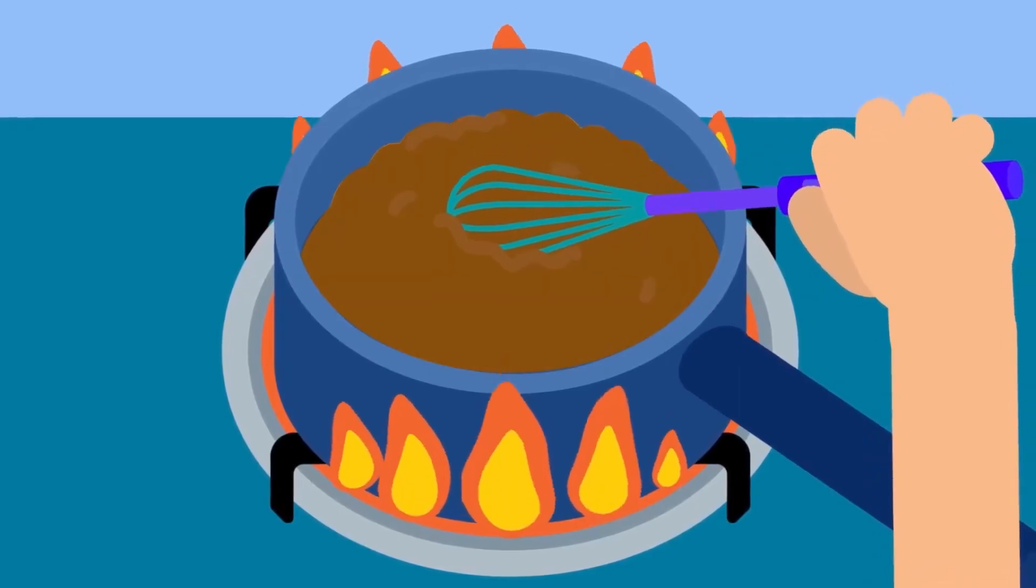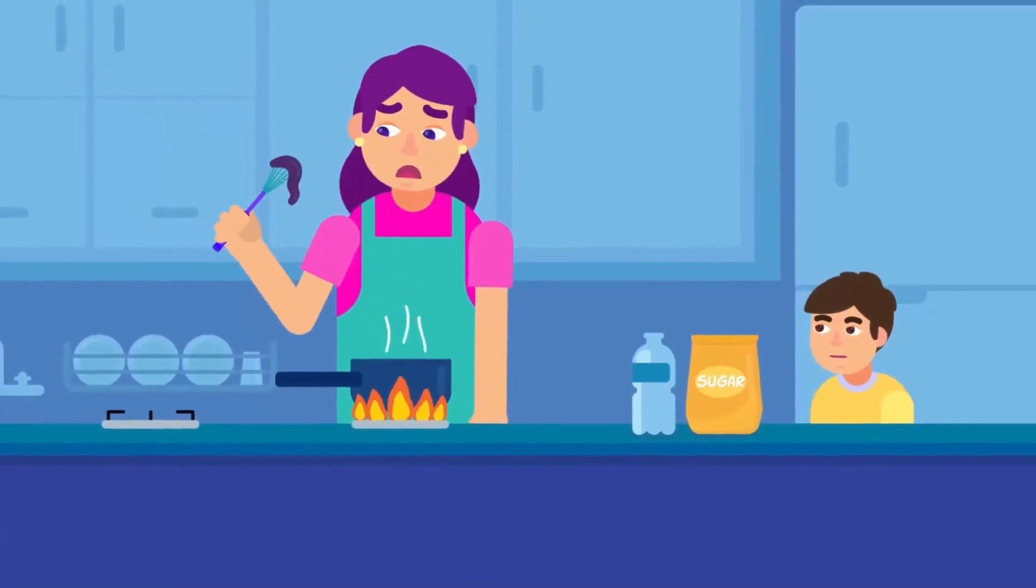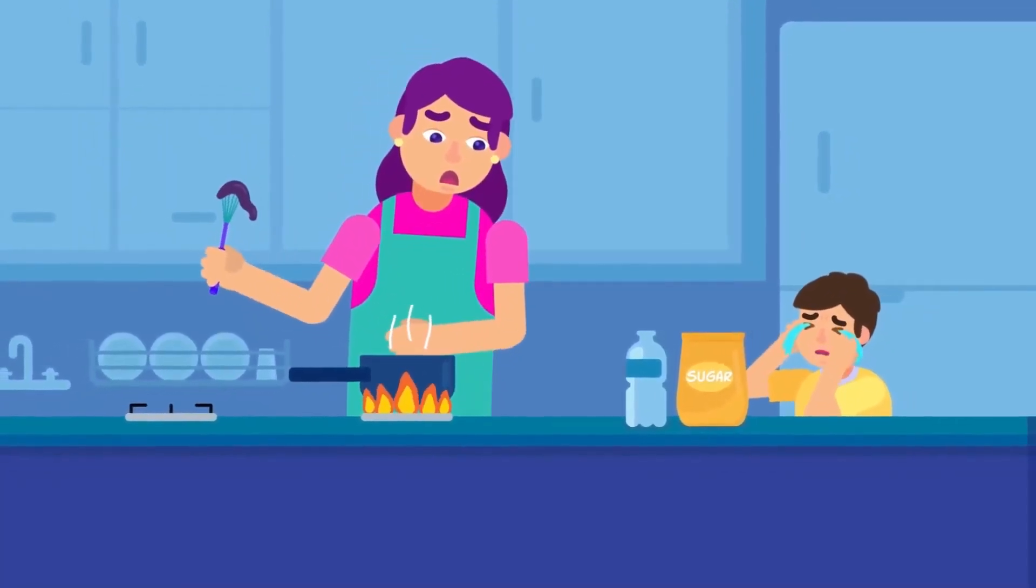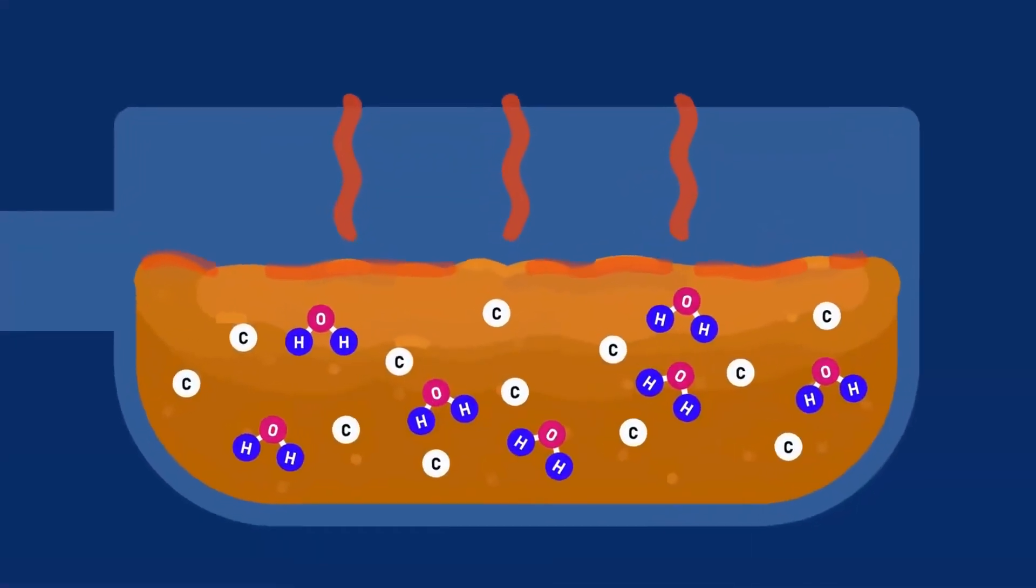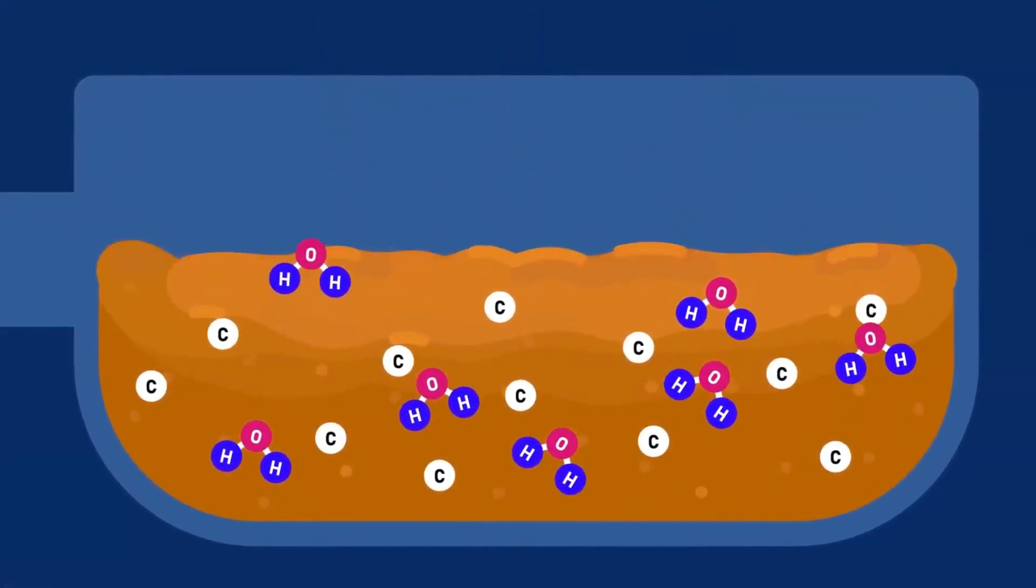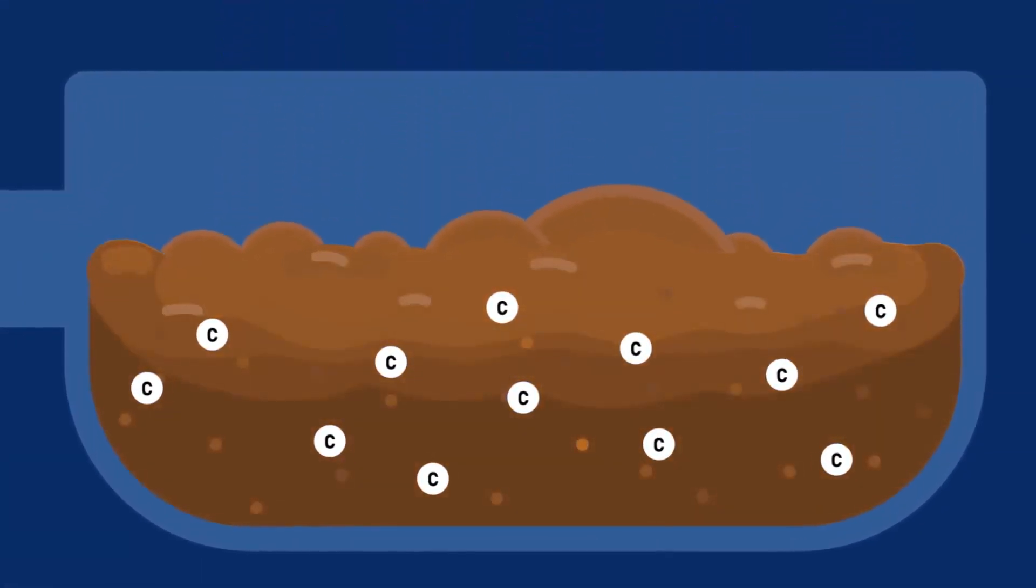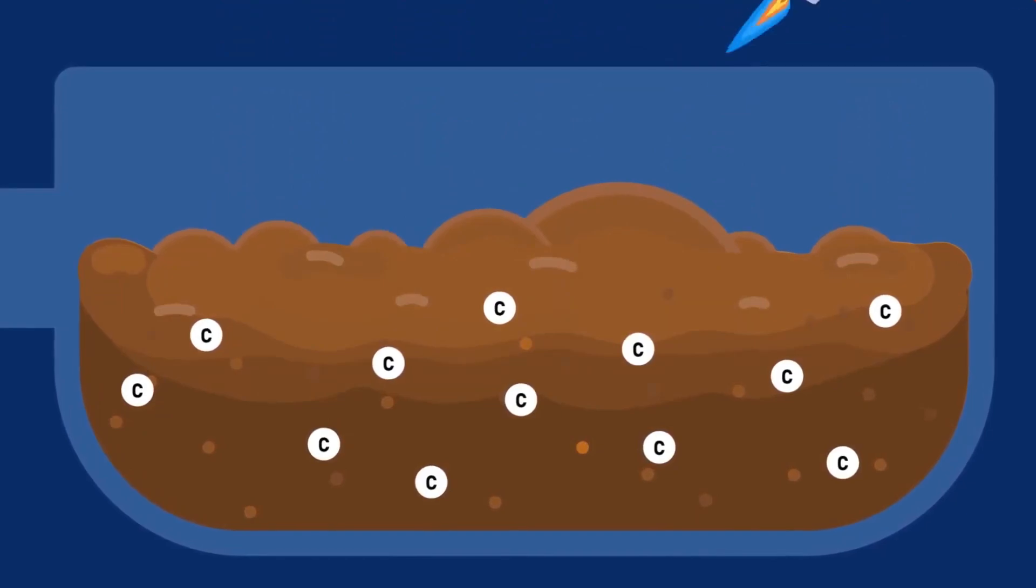You may have noticed that if we heat the sugar for too long, it turns black and bitter, unlike the sweet, tasty caramel we are used to. This is because the sugar is broken down into carbon and water vapors. Carbon cannot be broken down any further, as it is an element.